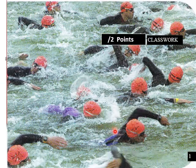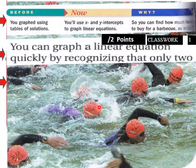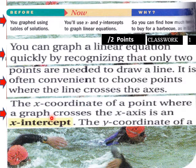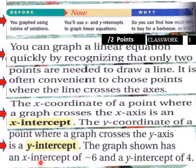Okay, to our lesson today. You've graphed using tables of solutions. You will use x and y intercepts to graph linear equations. You can graph a linear equation quickly by recognizing that only two points are needed to draw a line. It is often convenient to choose points where the line crosses the axes. The x-coordinate of a point where a graph crosses the x-axis is the x-intercept. The y-coordinate of a point where a graph crosses the y-axis is the y-intercept.